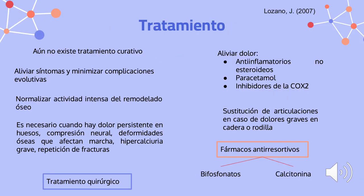Aún no existe un tratamiento curativo, por lo que el tratamiento tiene el objetivo de aliviar síntomas y minimizar complicaciones evolutivas. También está dirigido a normalizar la actividad intensa del remodelado óseo. El tratamiento es necesario cuando hay dolor persistente en huesos, compresión neural, deformidades óseas que afectan la marcha, hipercalciuria grave o repetición de fracturas. Los fármacos antiinflamatorios no esteroideos, el paracetamol o los inhibidores de la COX-2 pueden ser útiles para aliviar el dolor.